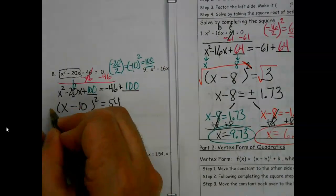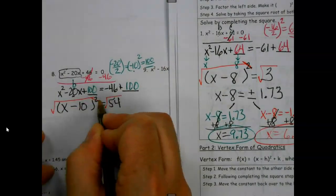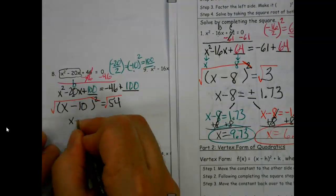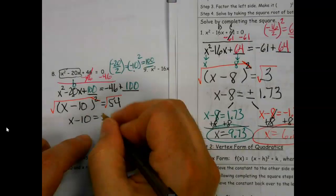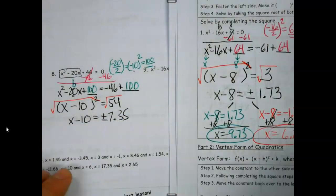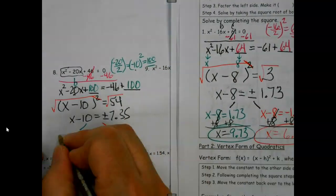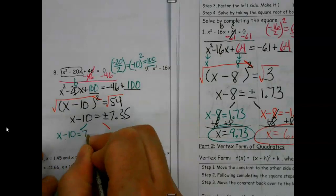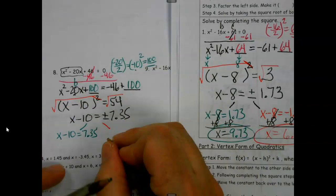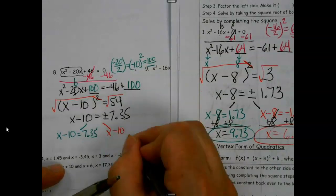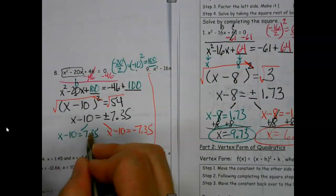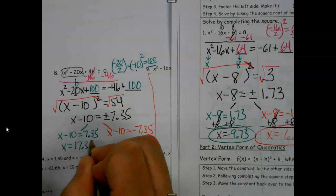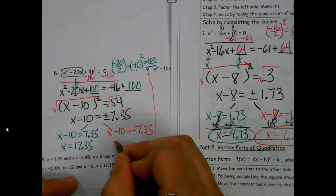Cancel those out. Square root of 54 is 7.35, and we're into divide-and-conquer mode - not literally dividing - but one with positive in my answer, one with negative in my answer. Add my 10 over. I do have answers at the bottom to check, which is nice. Same process every time, no twists, no crazy turns - just dividing through and going.